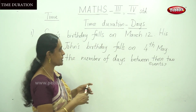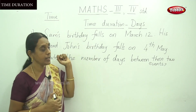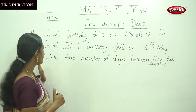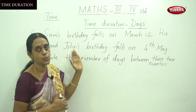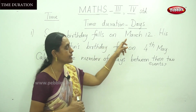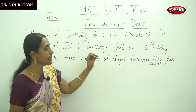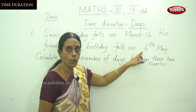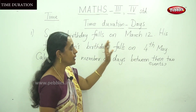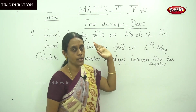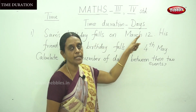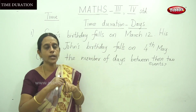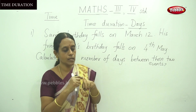First read the question: Sam's birthday falls on March 12, his friend John's birthday falls on 4th May. Calculate the number of days between these two events. You will not add the 12th date itself. March has 31 days, so first calculate 31 minus 12. That is your first calculation, using the knuckle portion. January, February, March — March has 31 days.